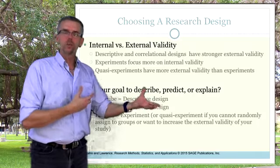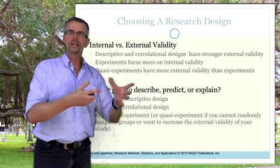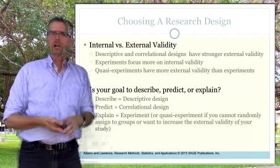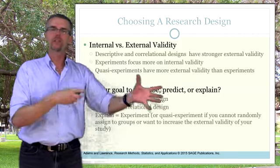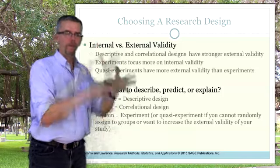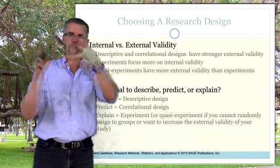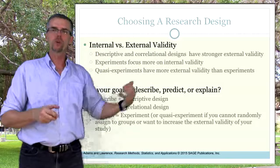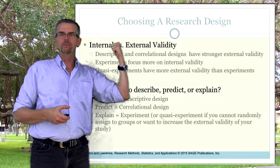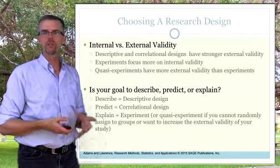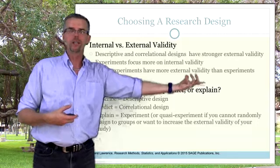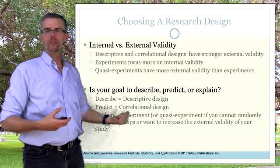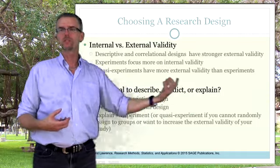Ask yourself whether you'll use quasi-experimental design, since quasi-experimental design gives better external validity. Mine was definitely quasi-experimental because the survey went out breaking down subpopulations — I identified five identities but didn't have a strict control population, so I had a quasi-experimental design. Second, is your goal to describe, predict, or explain? A descriptive design is one thing, a correlational design is another, and an experiment or quasi-experiment explains things.